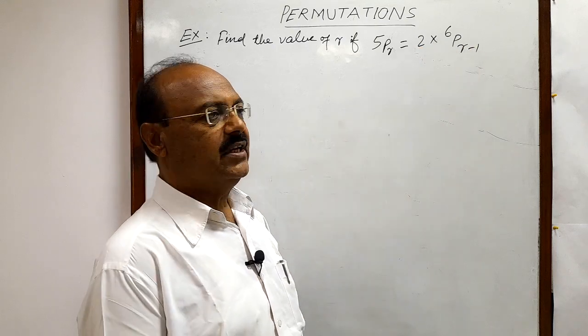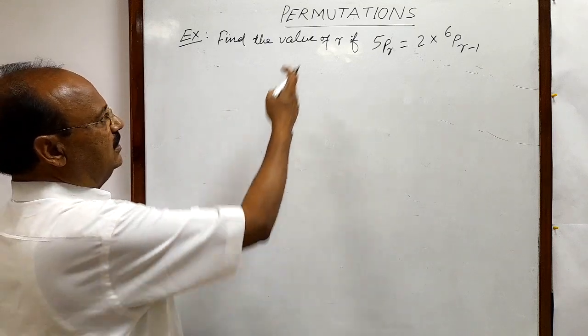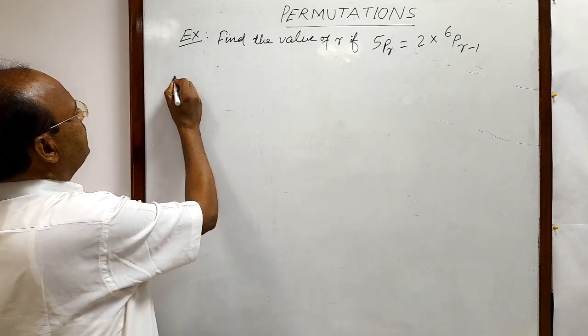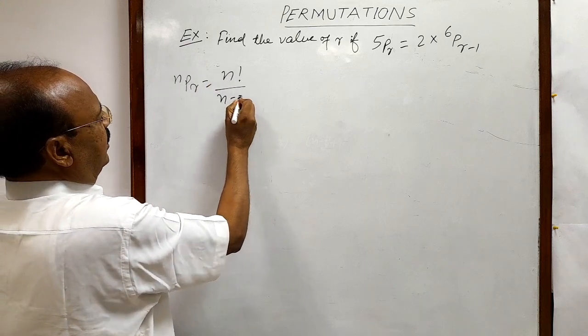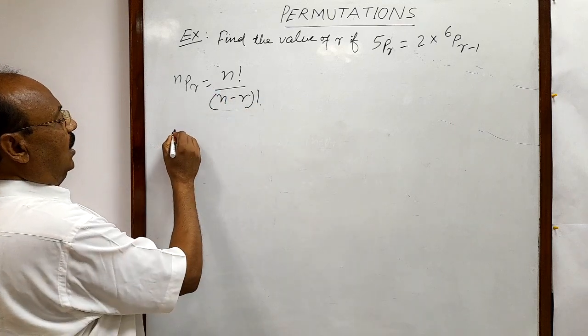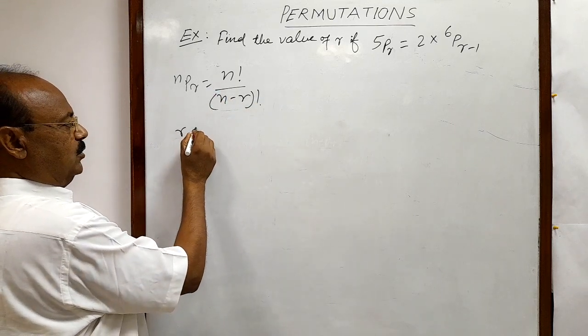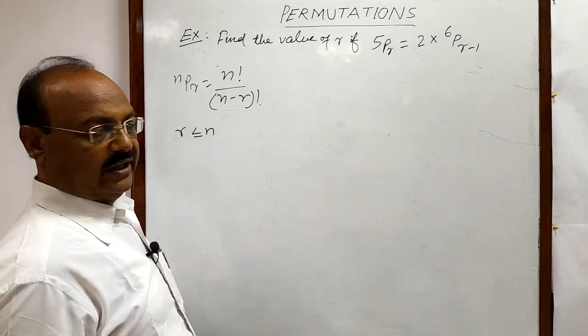We have already discussed in the previous videos that one very interesting formula is there in this topic permutations, that is nPr is equal to n factorial by n minus r whole factorial. Here r should be always less than or equal to n. r cannot be greater than n.